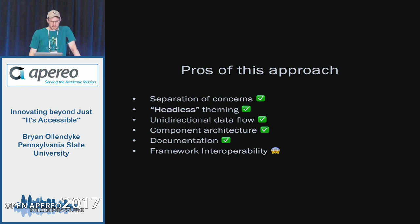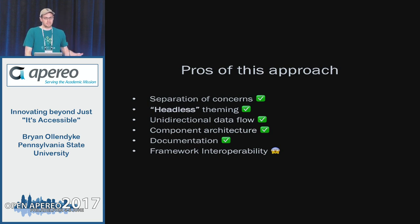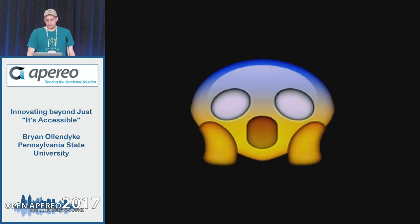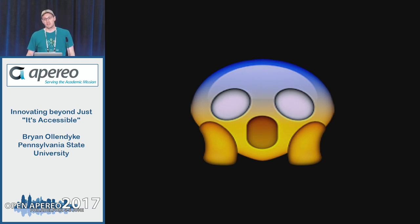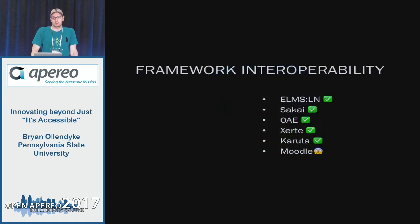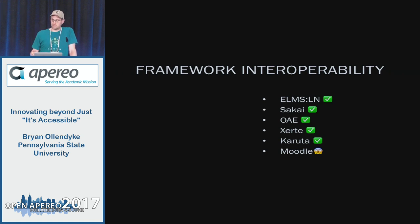The pros are: separation of concerns, unidirectional data flow, component architecture. If you use Polymer, it's self-documenting — as you build your element, you're also building a documentation site, which is really useful. And the last one is the thing I'm here to not shut up about: framework interoperability. Framework interoperability suggests that we could have all of our systems share elements. We all use divs, body tags, HTML tags in all of our systems. So if we all made HTML elements that all of us can use, then we could use them in all of our systems.